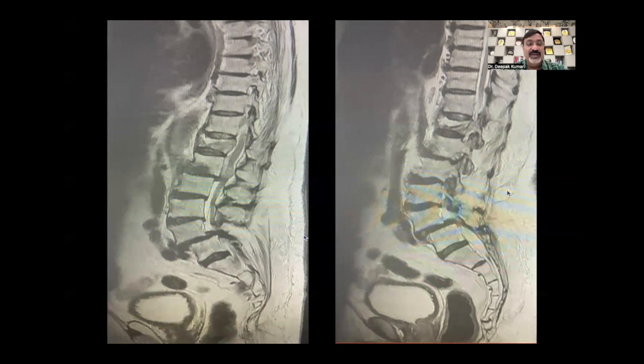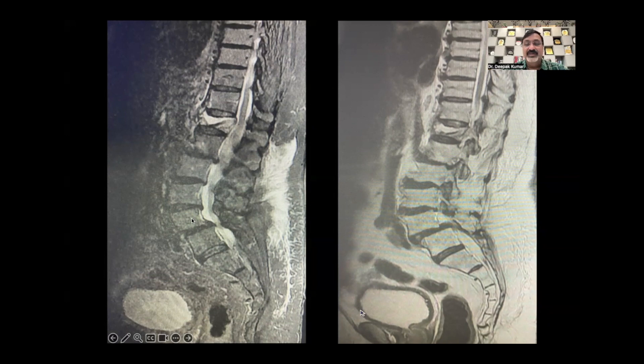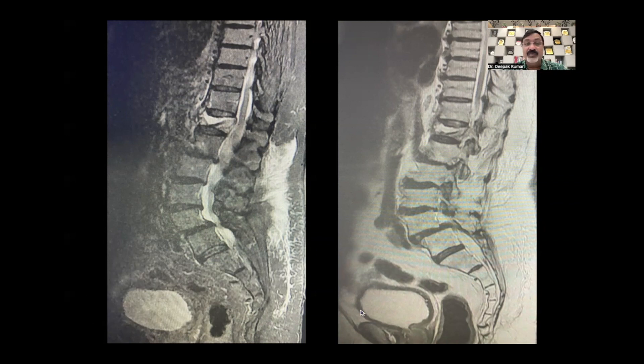They discussed it with the orthopedics. And the orthopedics suggested to do the kyphoplasty, where they inject the bone cement in the fractured area. Look at the erosion of the vertebra here. But because this man was 92, his general condition was not fit to undergo general anesthesia. So they said, no, we can't do it. It is very risky to put him in general anesthesia.